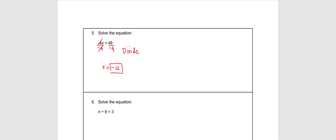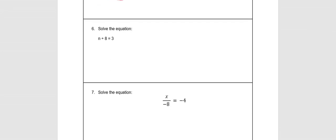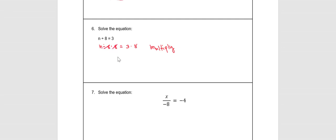In number 6, this is n divided by 8. The inverse of division is multiplication, so we multiply both sides: negative 8 times 8 is equal to 3 times 8. We use multiplication because the understood operation involving 8 is division, and the opposite of division is multiplication. We cancel 8 and 8, which gives us n equals 3 times 8, or 24.